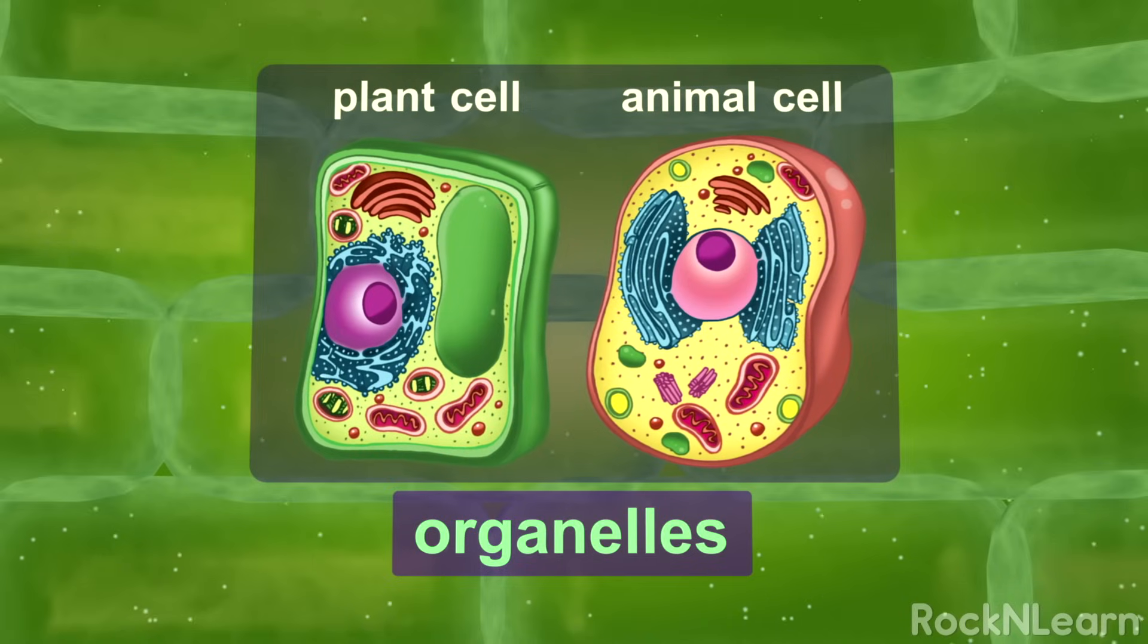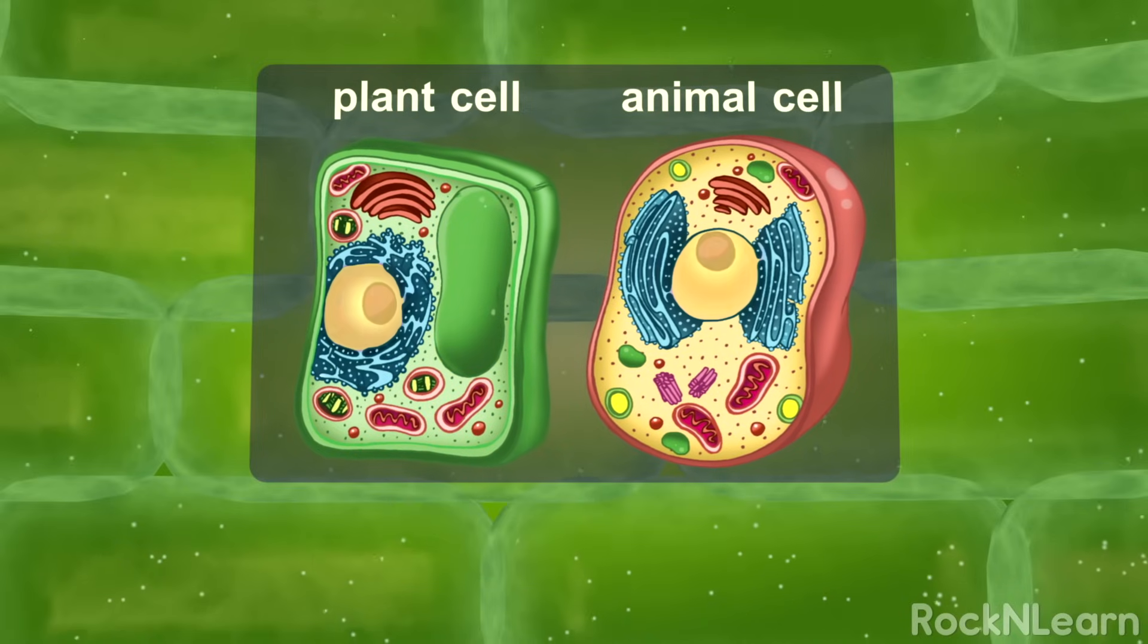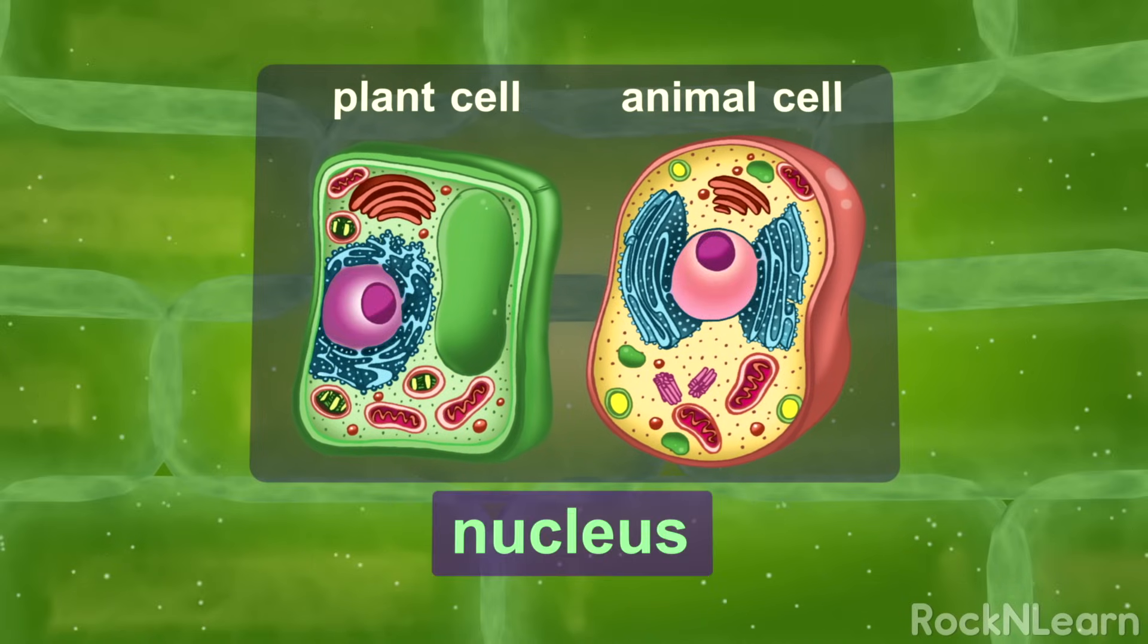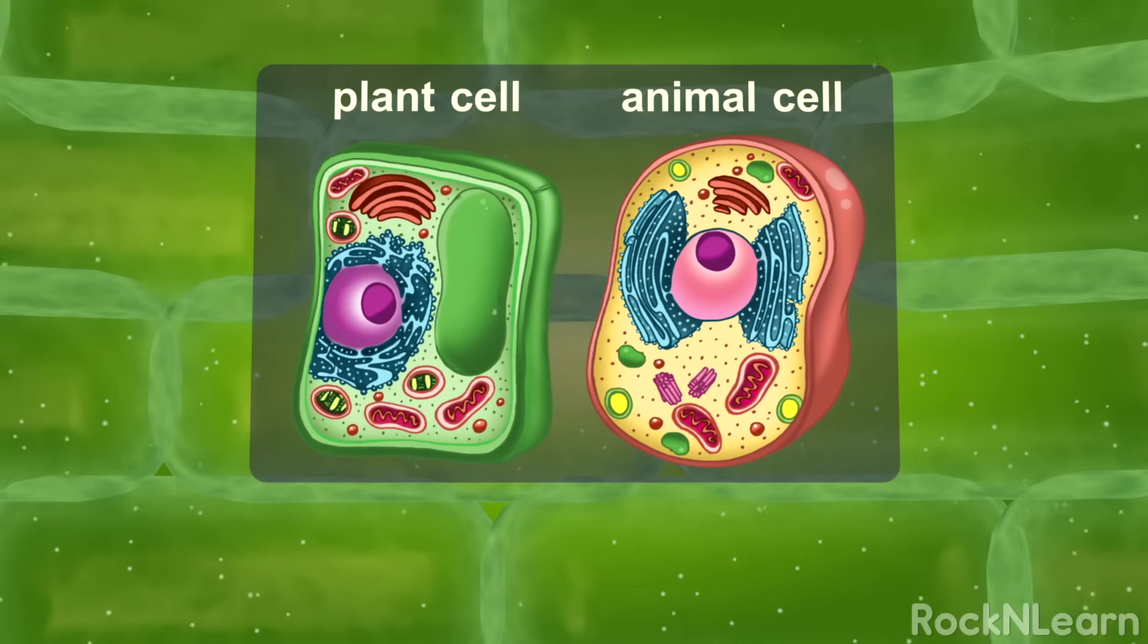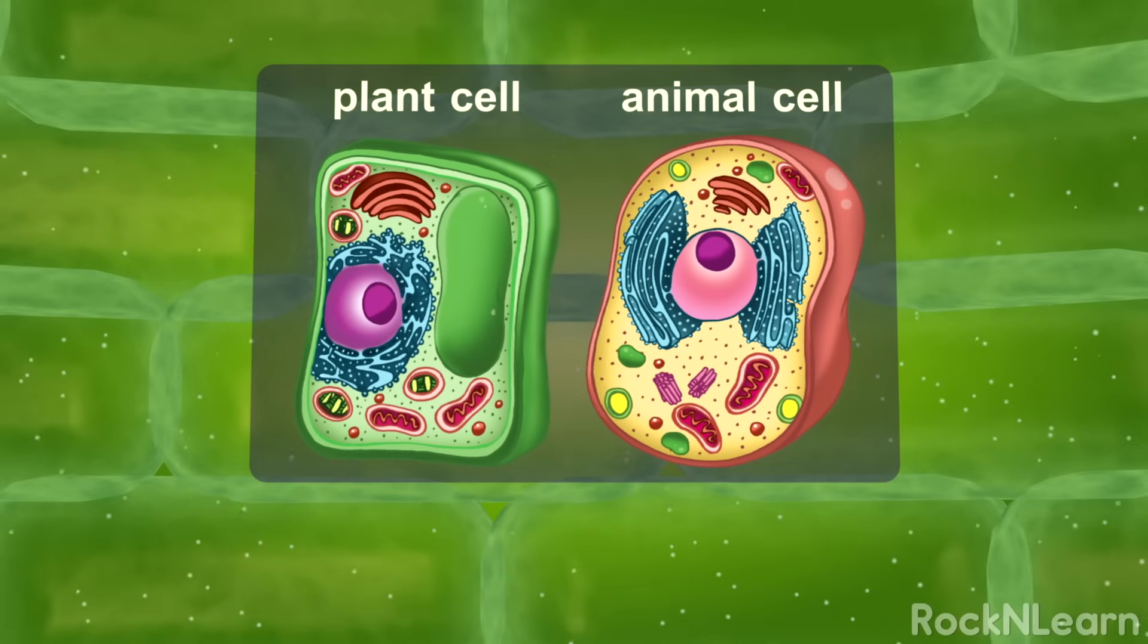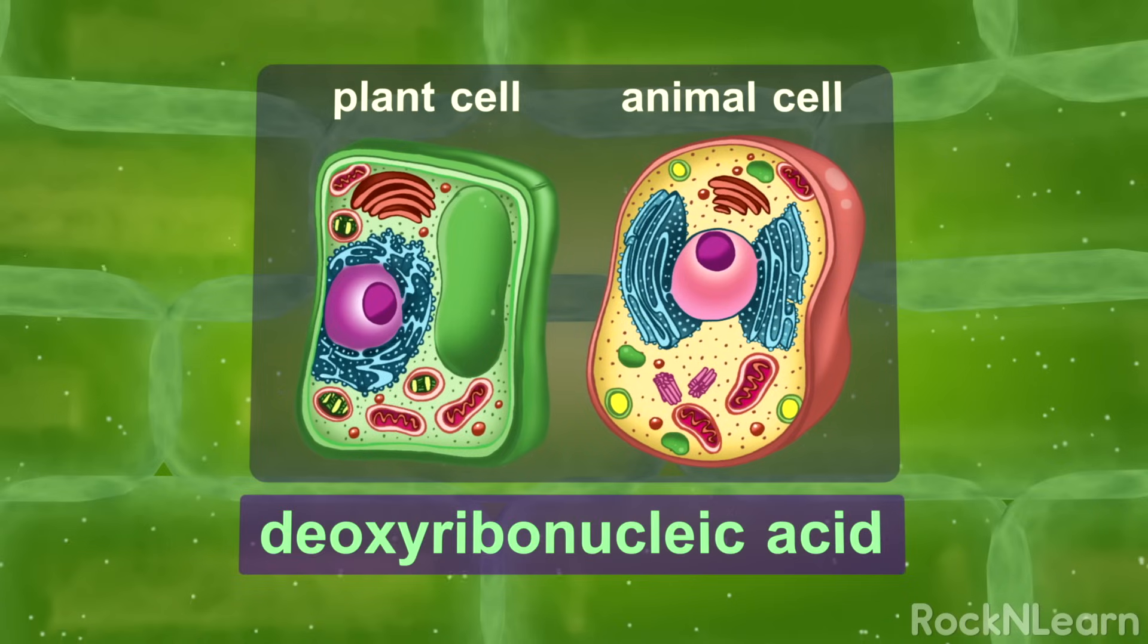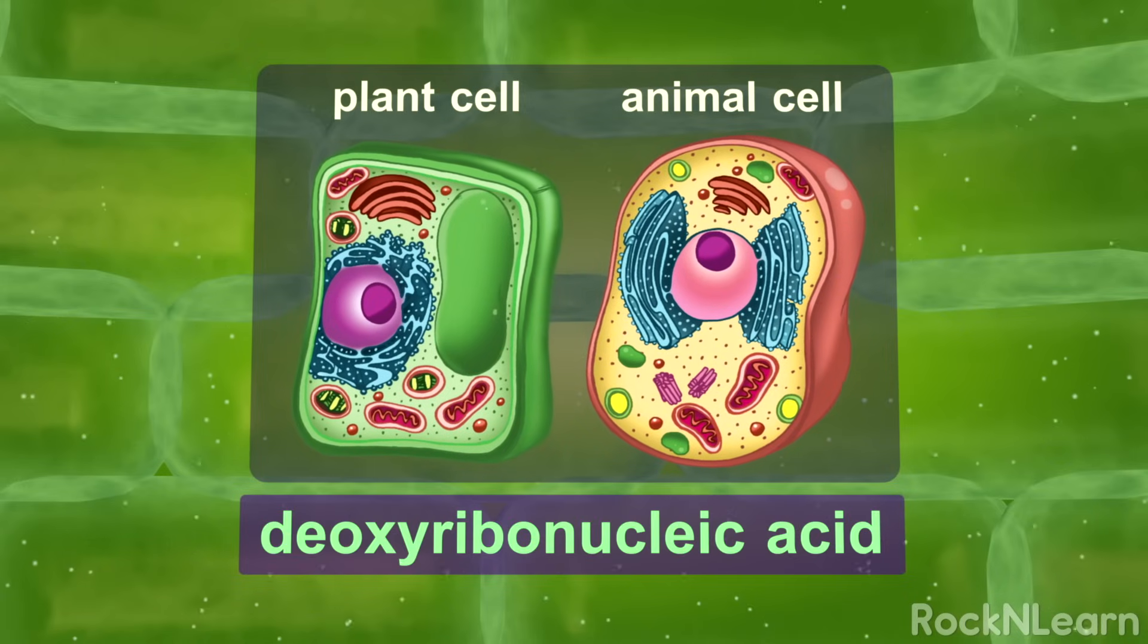Both of these cells have a nucleus, which is where all the genetic material is stored. This genetic material is made of molecules called DNA, or deoxyribonucleic acid.